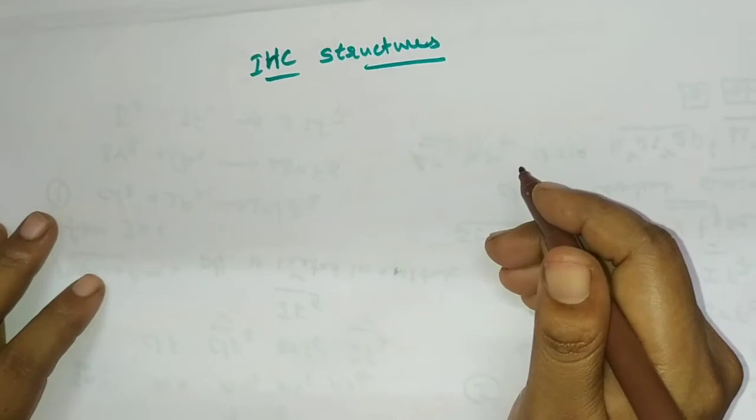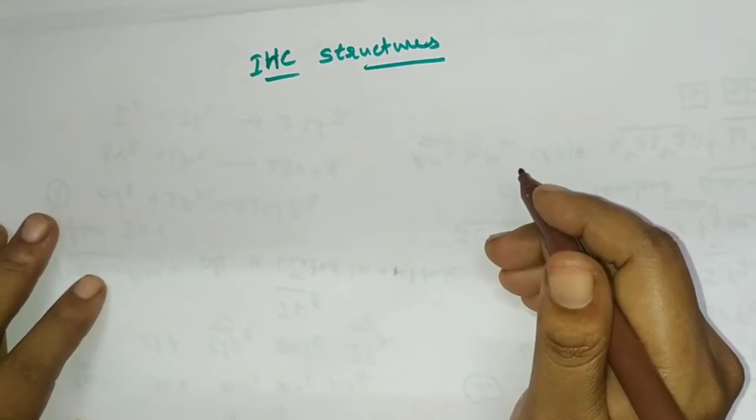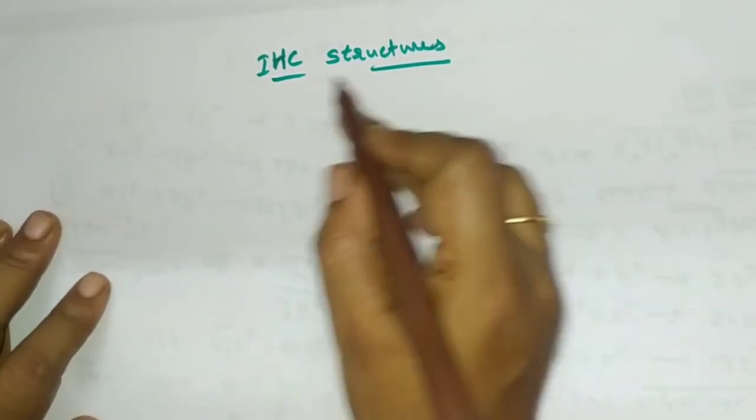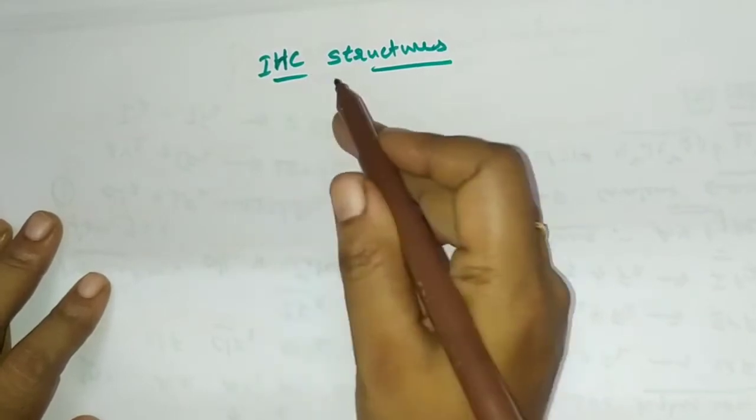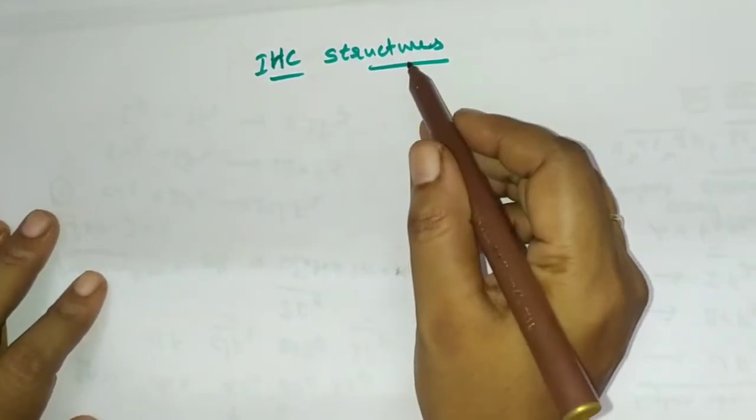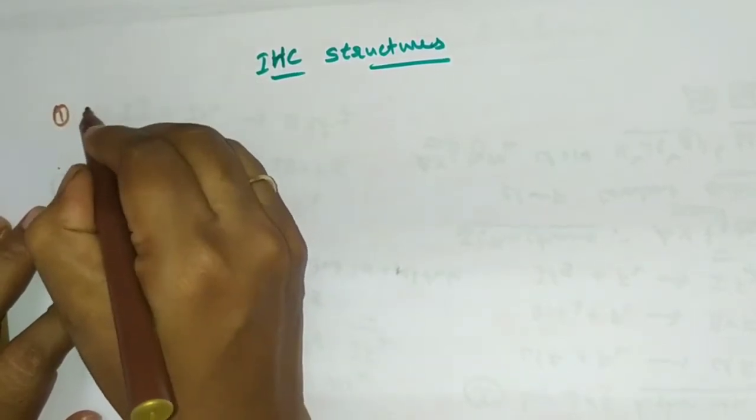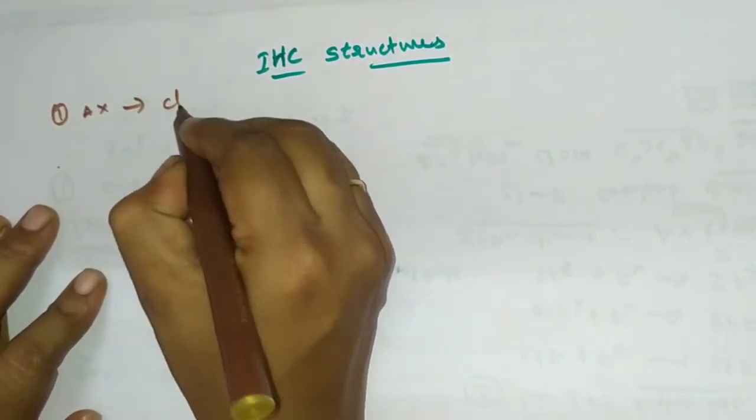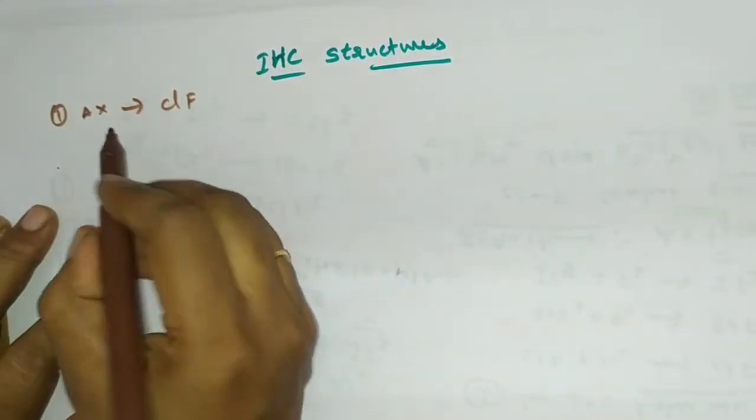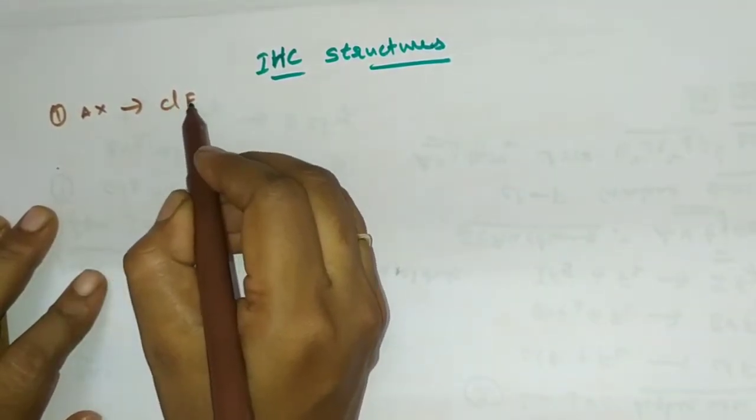Hi everyone, welcome to my channel. Today we are discussing interhalogen compounds structures. IHC means interhalogen compound, just our shortcut structures. So here first is AX. AX example is ClF, so here just one halogen bond with another halogen.